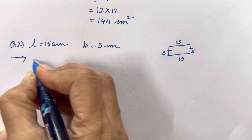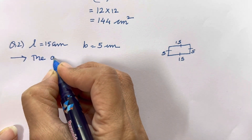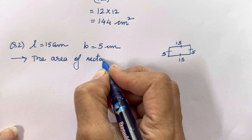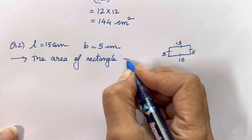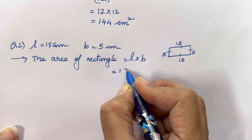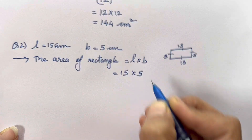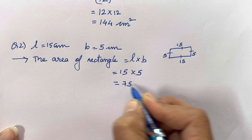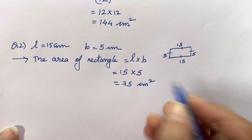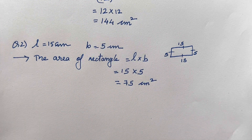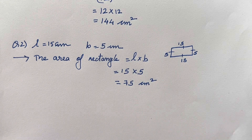So first we will write the formula. The area of a rectangle is length into breadth. Length is 15, breadth is 5, so 15 times 5 is 75 centimeter square. Now why are we writing centimeter square? Because we are finding area, so while finding the area we have to write centimeter square.